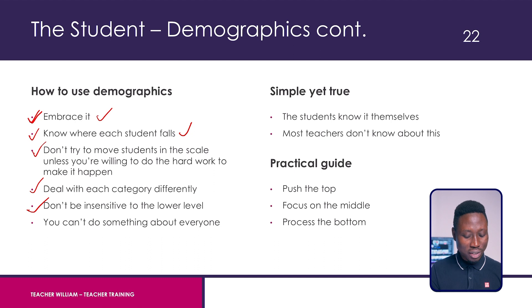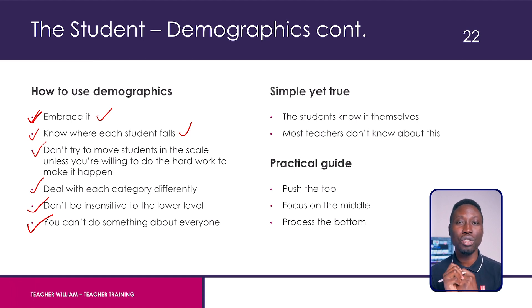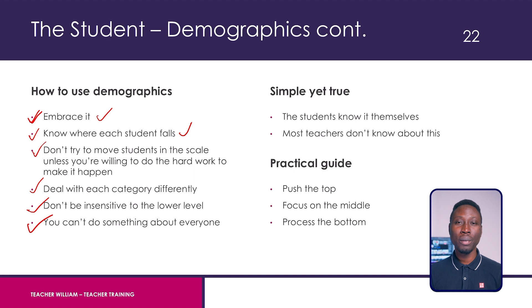You can't do something about everyone. Just understand this — if there's one piece of advice I can give you, know that you can't help every student in your class at the same level. That's just the truth. It's just not going to happen. You need to embrace this. It doesn't mean you're a bad teacher. This is demographics. Most teachers don't know about it, so they try really hard to control a certain student and end up frustrated.